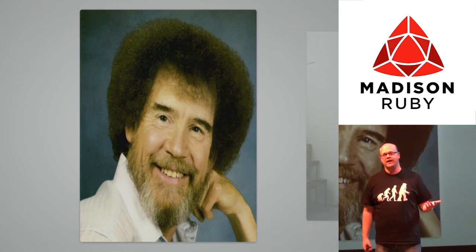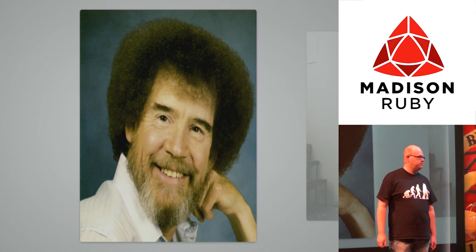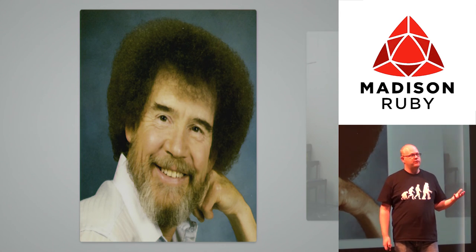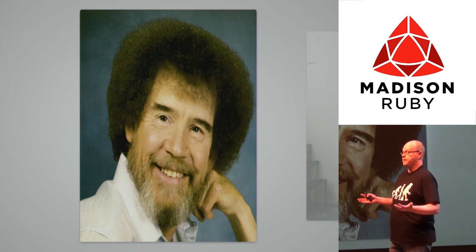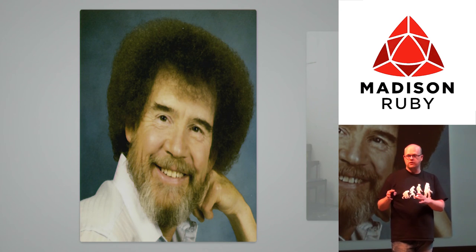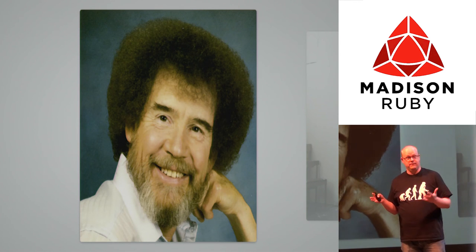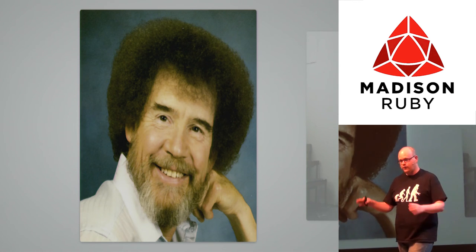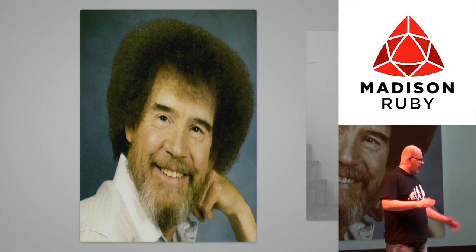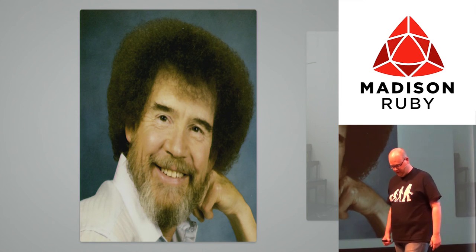Bob was this white guy sporting an afro — the only one in history to actually pull that off. He had this show on PBS where he made a painting in 30 minutes. Bob is the inventor of modular painting. He had modules: a tree, a crooked house, some clouds, and he would combine all those modules to create a new painting. Using this standard set of modules — his own Bootstrap basically — he created different paintings. We want a blank canvas, have a bunch of modules like Bootstrap, but not have it look like Bootstrap. Just reusable components.